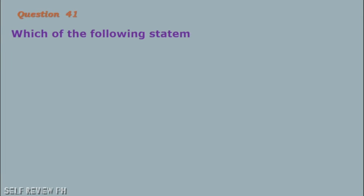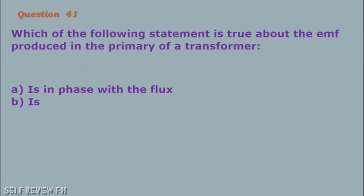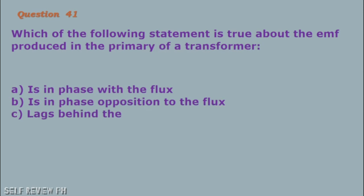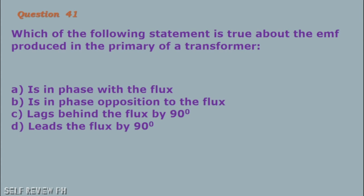Question number 41: Which of the following statements is true about the EMF produced in the primary of a transformer? A. Is in phase with the flux B. Is in phase opposition to the flux C. Lags behind the flux by 90 degrees D. Leads the flux by 90 degrees. The correct answer is letter D, leads the flux by 90 degrees.